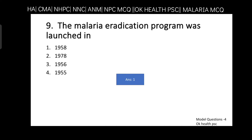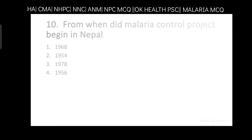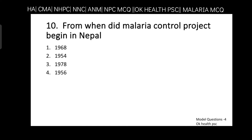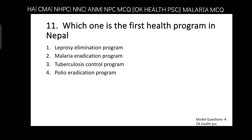Question number ten: from when did the malaria control project begin in Nepal? 1968, 1954, 1978, or 1956? Answer is option two — 1954. The malaria control project began in 1954. Last question: which one is the first health program in Nepal? Leprosy elimination, malaria eradication, tuberculosis control, or polio eradication? Answer is option two — malaria eradication program.